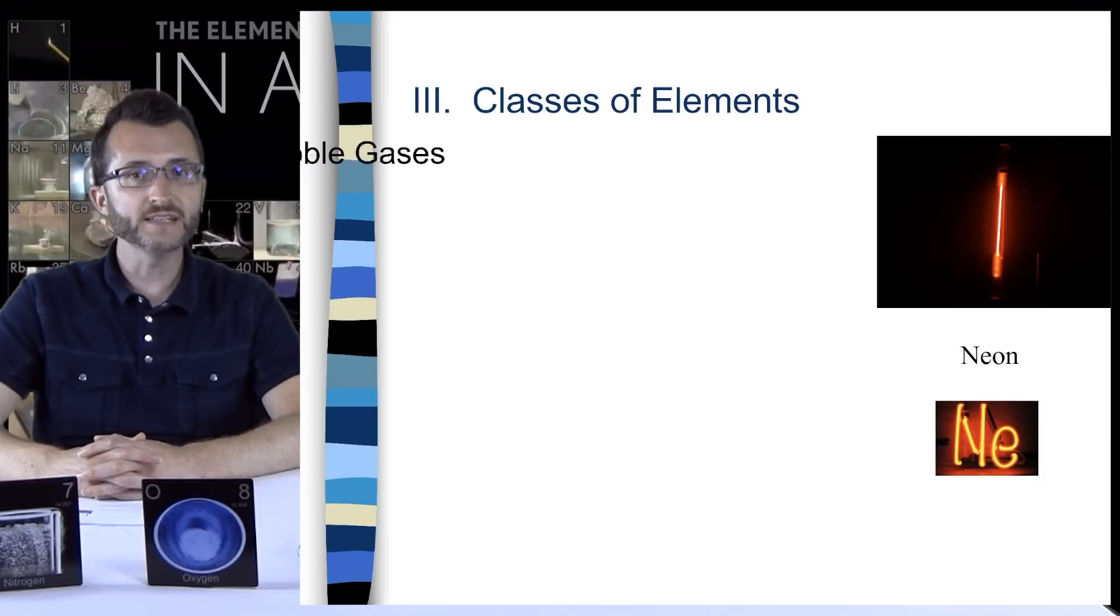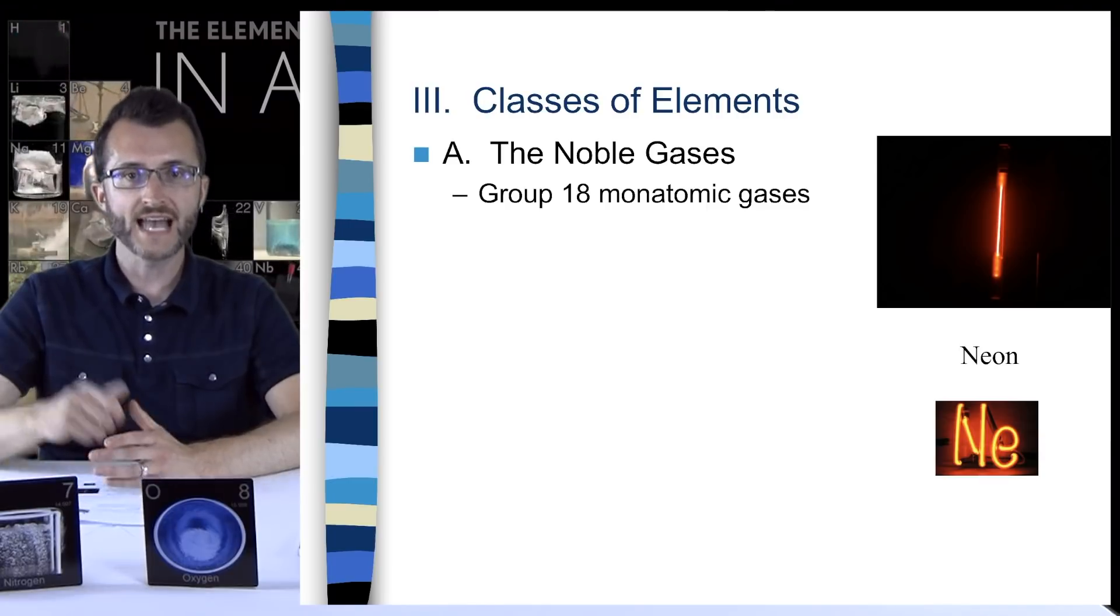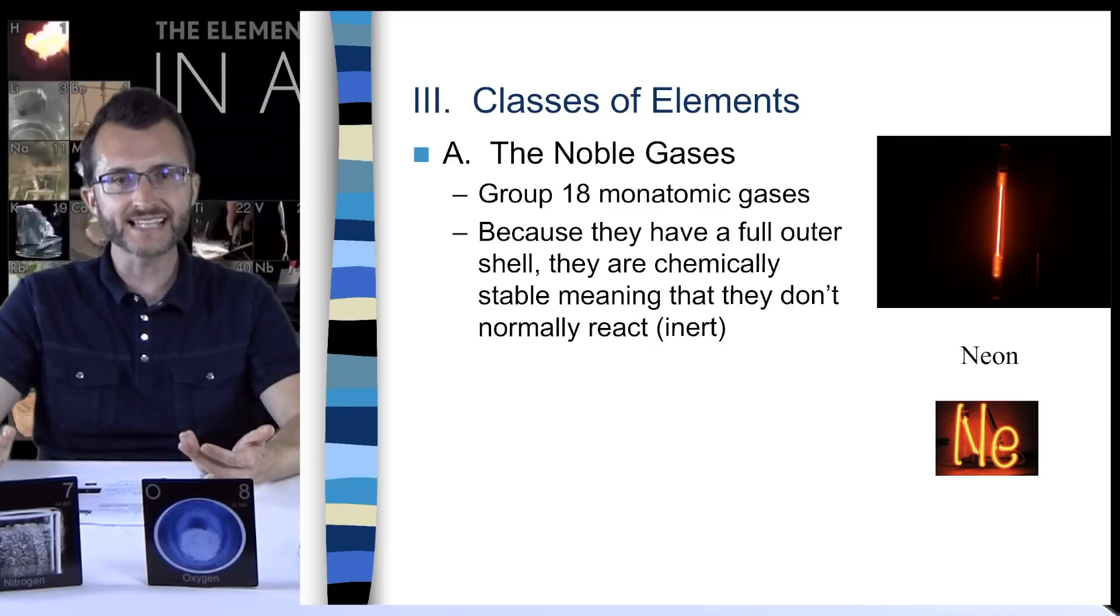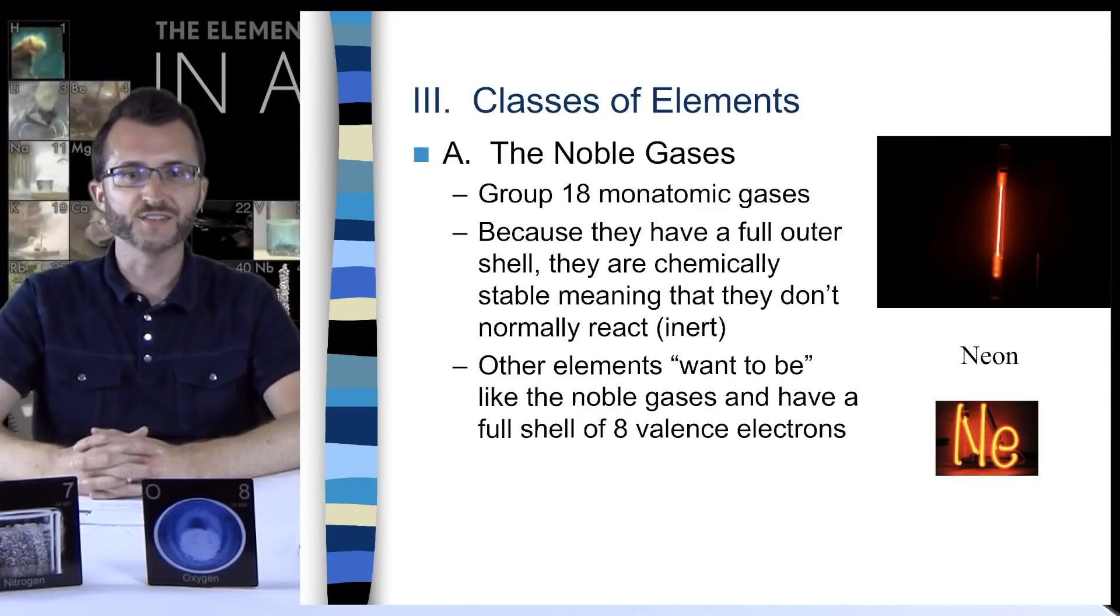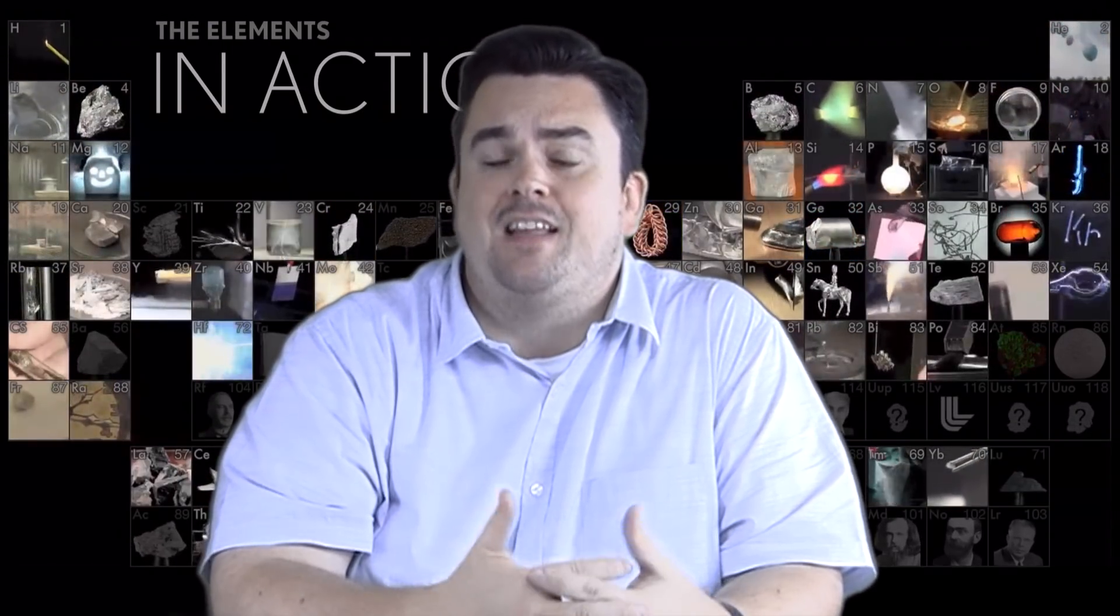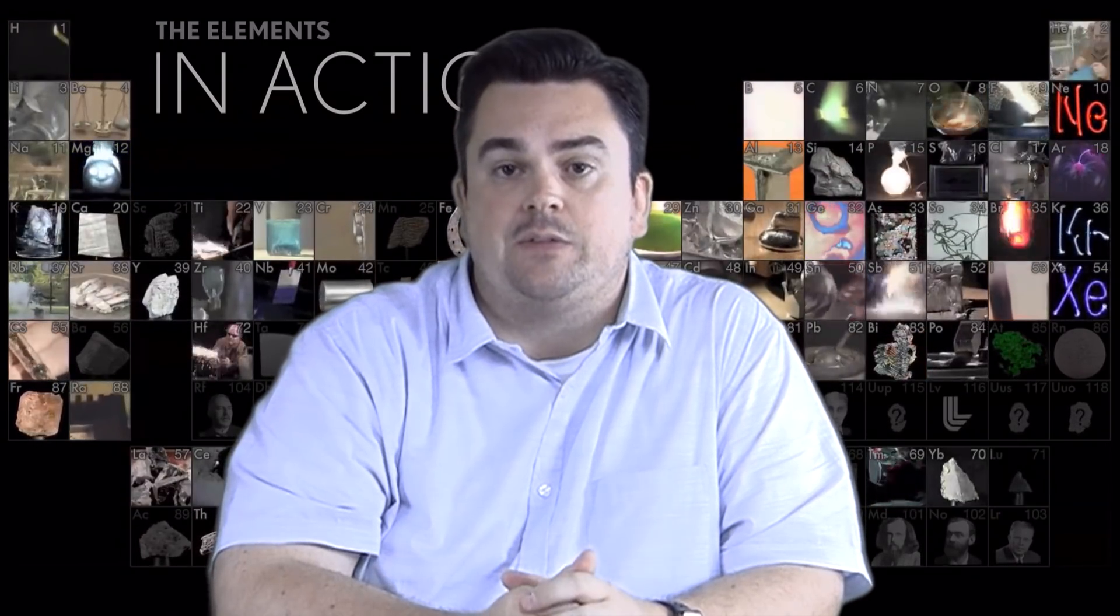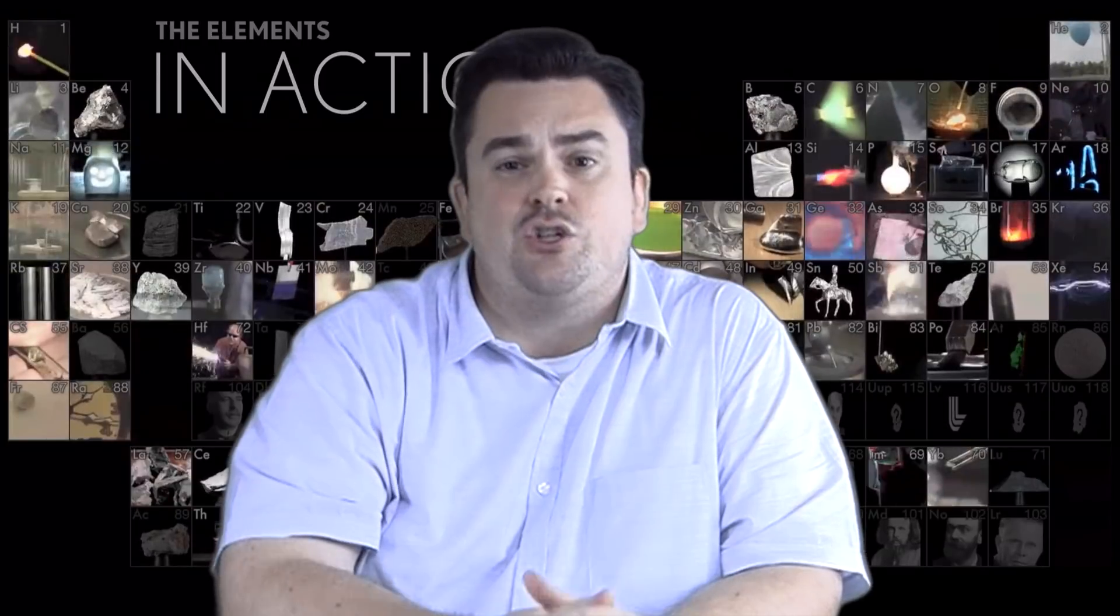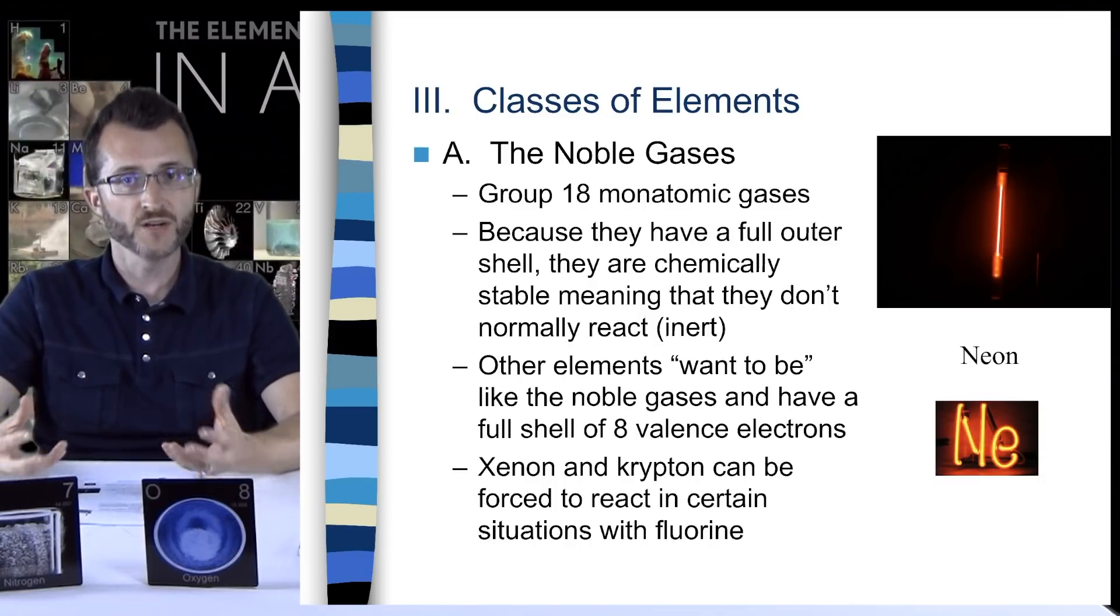Classes of elements. Let's begin with the noble gases. The noble gases are the group 18 monatomic gases. Remember, monatomic means one atom. Because they have a full outer shell, they are chemically stable, meaning that they don't normally react. We call them inert. Other elements want to be like the noble gases and have a full shell of eight valence electrons. While it's true for most elements of the periodic table to be full in their valence shell with eight electrons, it's important to remember that helium, being at the top of the noble gases, only has two in its outer shell. This is because helium only has one principal energy level, and that first principal energy level only needs two to be full. Xenon and krypton can be forced to react in certain situations with fluorine, so there are some noble gases that can react.